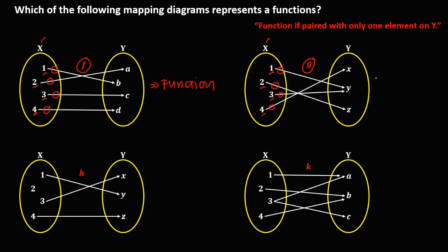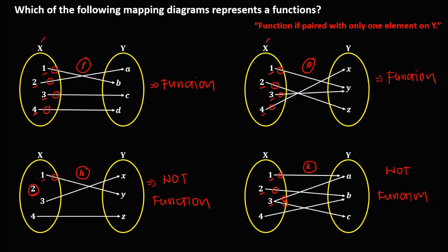The next diagram is also a function. For relation h, 1 is paired with a single element, but 2 is not paired with a single element. Therefore, this diagram is not a function, because a mapping diagram is a function only if each element is paired with exactly one element.